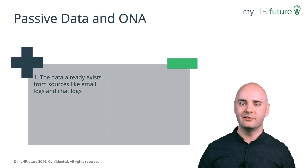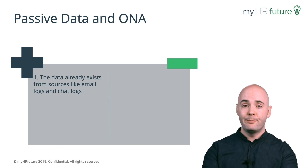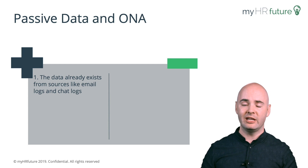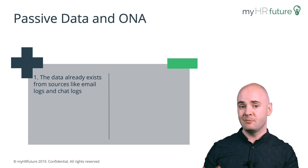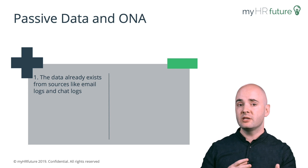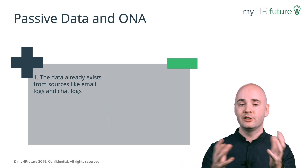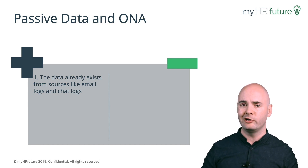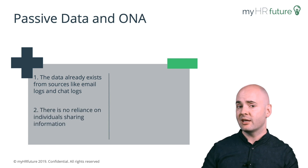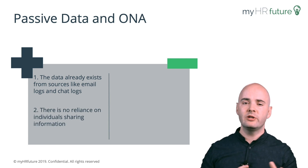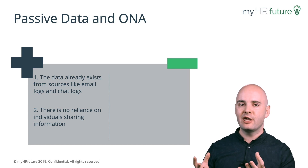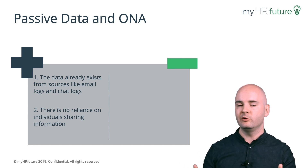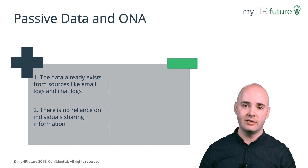Let's talk about passive data first. Passive data has its pros and cons. The biggest pro to collecting passive data is, as the name suggests, it pretty much already exists. We can get this information from email systems or from chat logs, and we just need to have a conversation with our IT team in order to get it. We do not have to ask anything from anyone about their relationships because that data already exists.